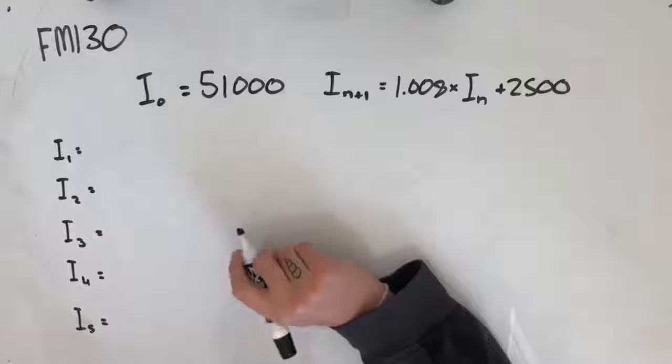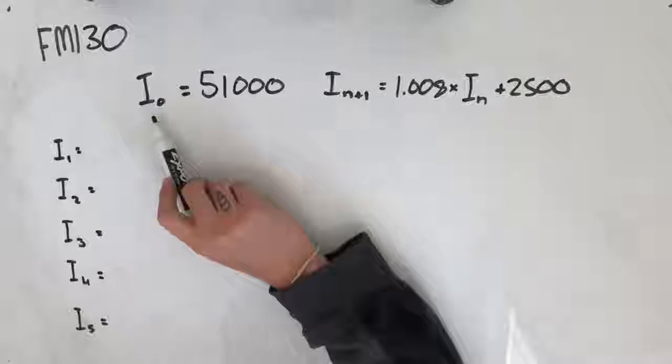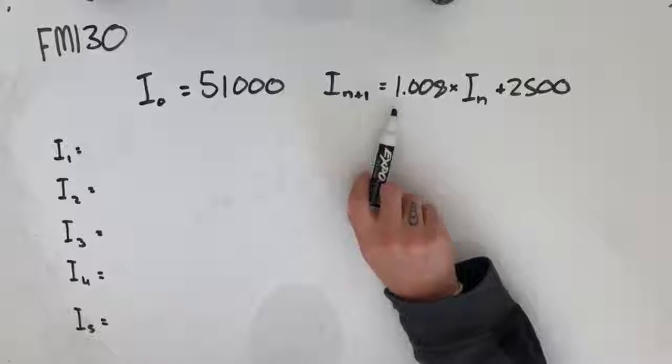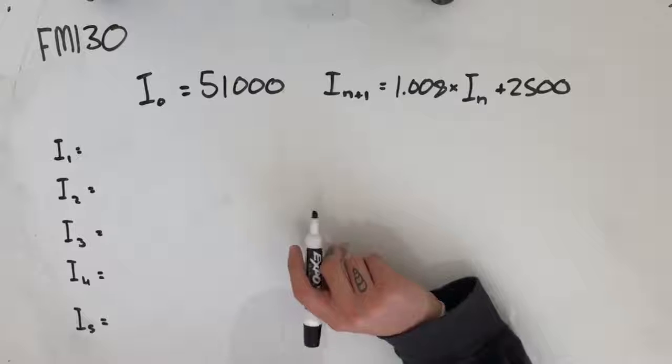The value of an investment in dollars after n years, IN, can be modelled by the recurrence relation I0 equals 51,000, IN+1 equals 1.008 times IN plus 2,500.